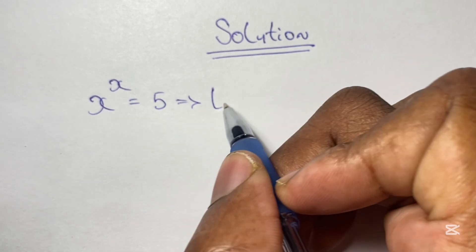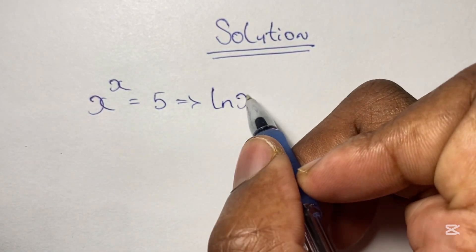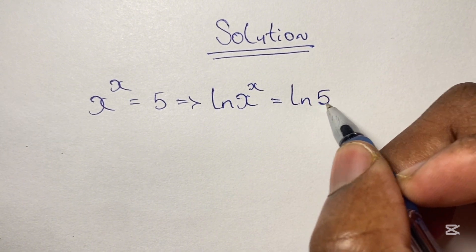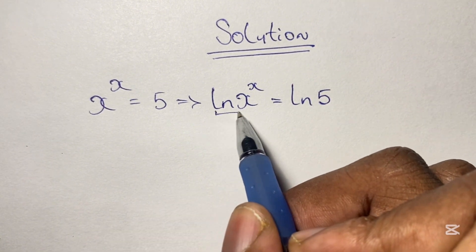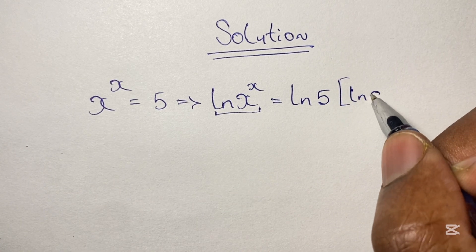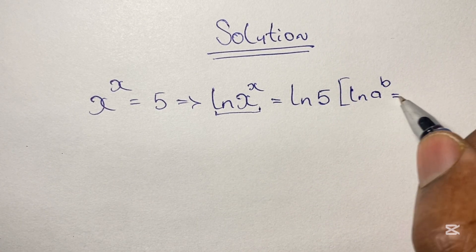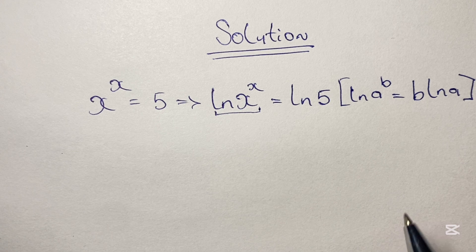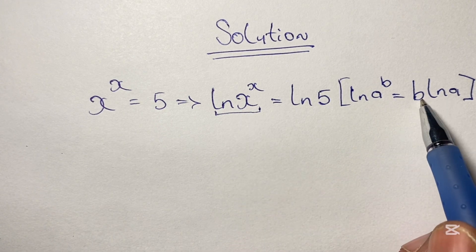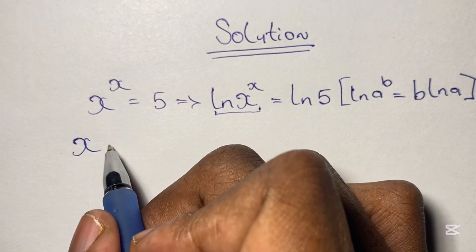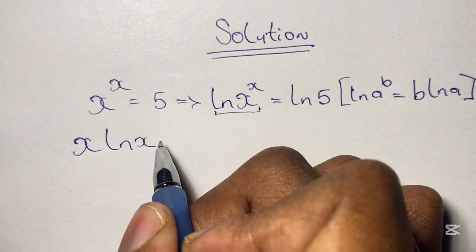We start by taking the natural log of both sides of this equation, giving us ln(x^x) equals ln 5. We simplify using the logarithm power rule: ln(a^b) equals b times ln(a). So ln(x^x) becomes x times ln(x), giving us x times ln x equals ln 5.